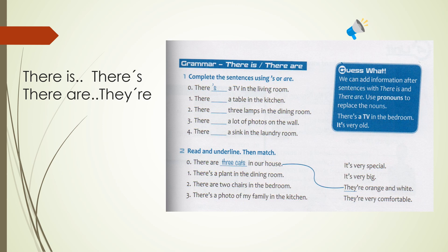En esta imagen que tienen aquí pegada, es parte de su workbook de la página 139. En el cuadrito azul dice, we can add information after sentences with there is and there are. Use pronouns to replace the noun. There is a TV in the bedroom. It's very old.